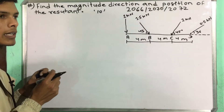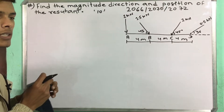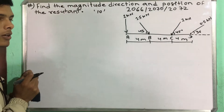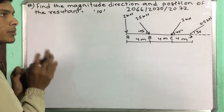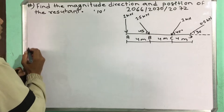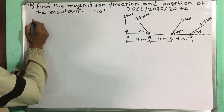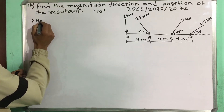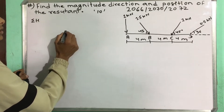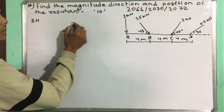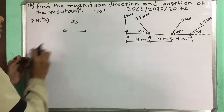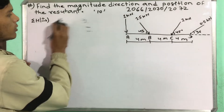The first thing we need to find is the horizontal force, vertical force, and resultant. This is the resultant angle. This is the position. First, we need to find the horizontal force.